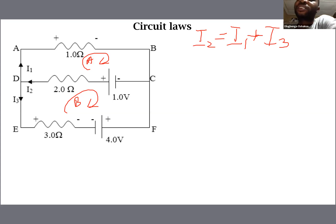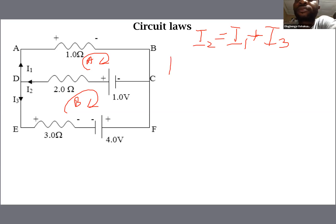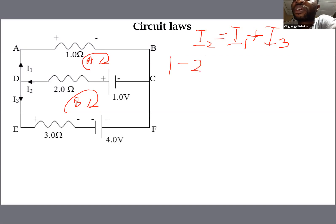Let's talk about Loop A. As usual, let's start from the battery. We are travelling the loop in a clockwise direction, and from this 1-volt battery we expect current to flow out in this direction, so it agrees with the loop. So we have 1 volt. Now we have gotten to this 2-ohm resistor. I2 is flowing through this 2-ohm resistor in a direction that still agrees with our loop, so that is minus 2I2.